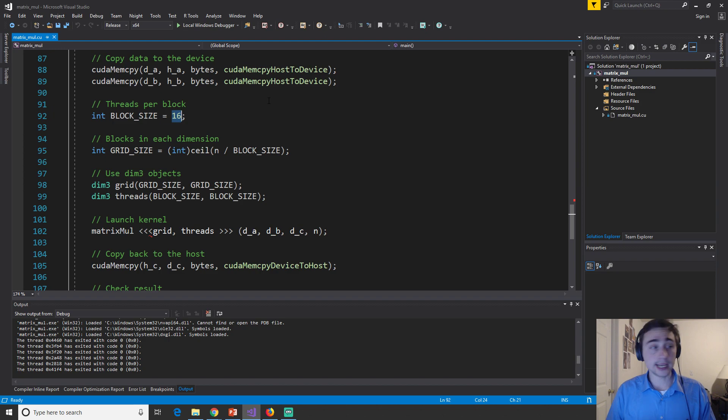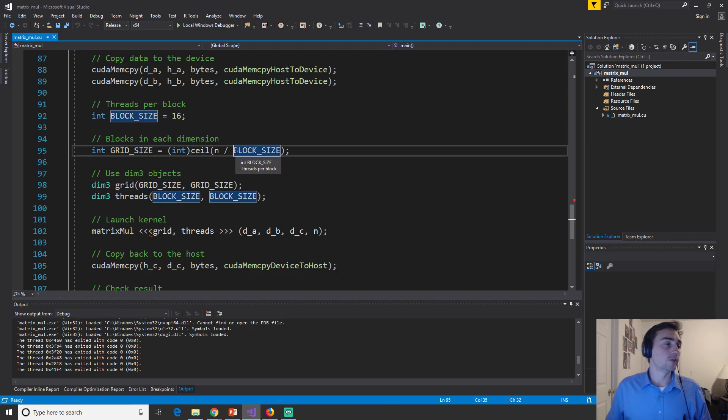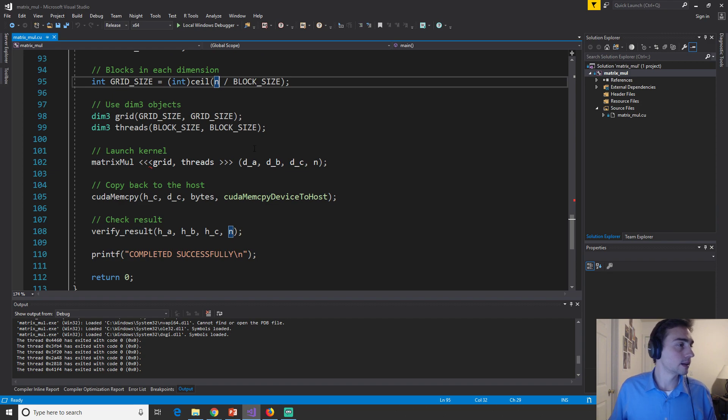In this case, we'll be using size 16 by 16 blocks. So 256 threads per block, but in two dimensions, and then we'll be using equal sized grids as well. So we'll divide the number of elements by 16 and then we'll end up having 1024 by 1024 total threads. So that ends up being a very large number. So two to the 20th. Okay. So then we launch matrix multiply, copy back our result as per usual, and then we verify our results.